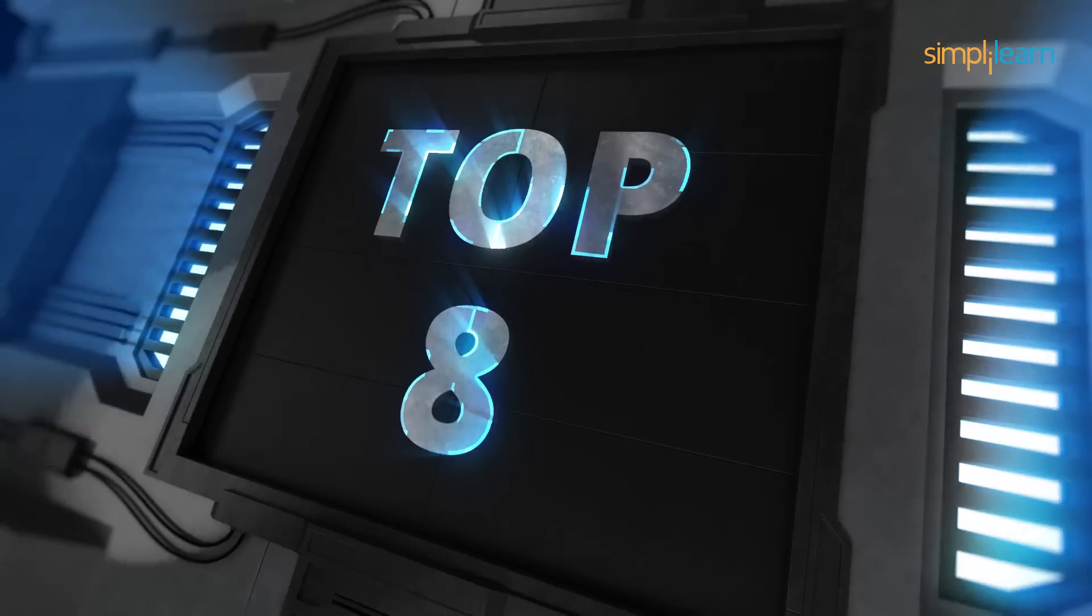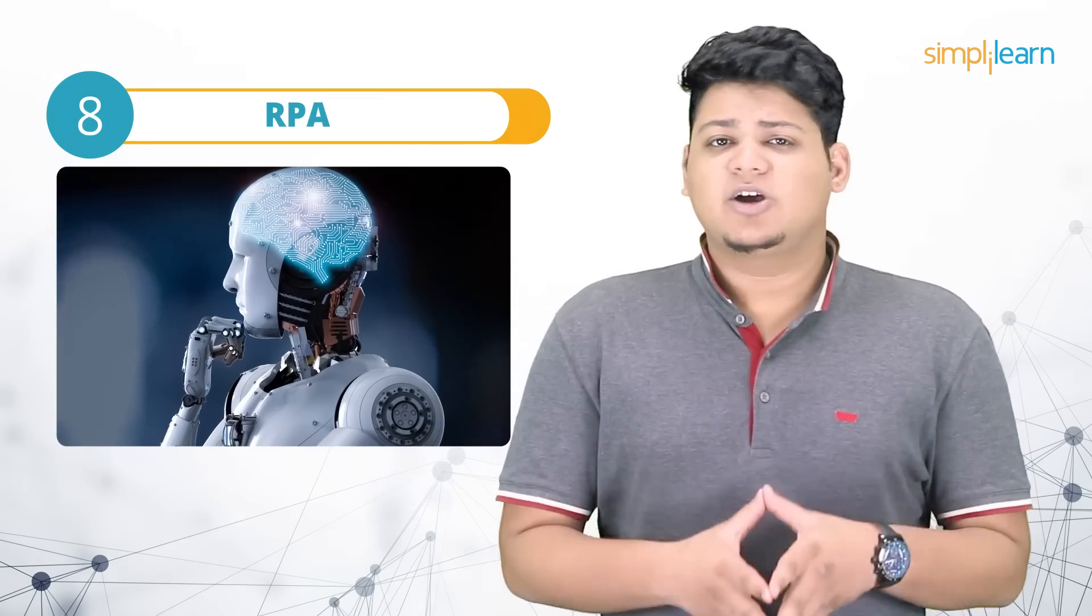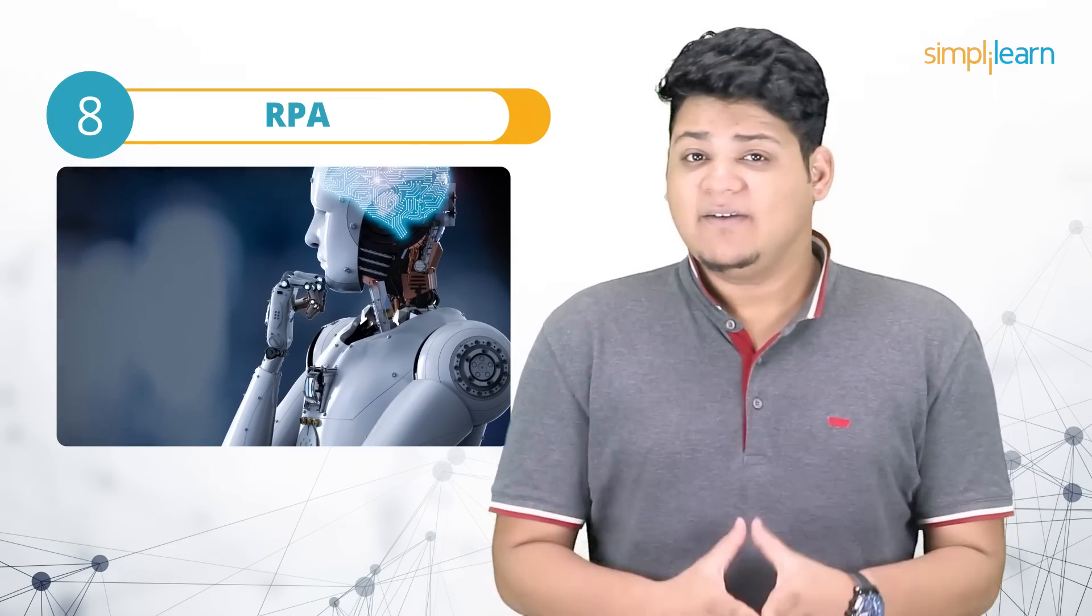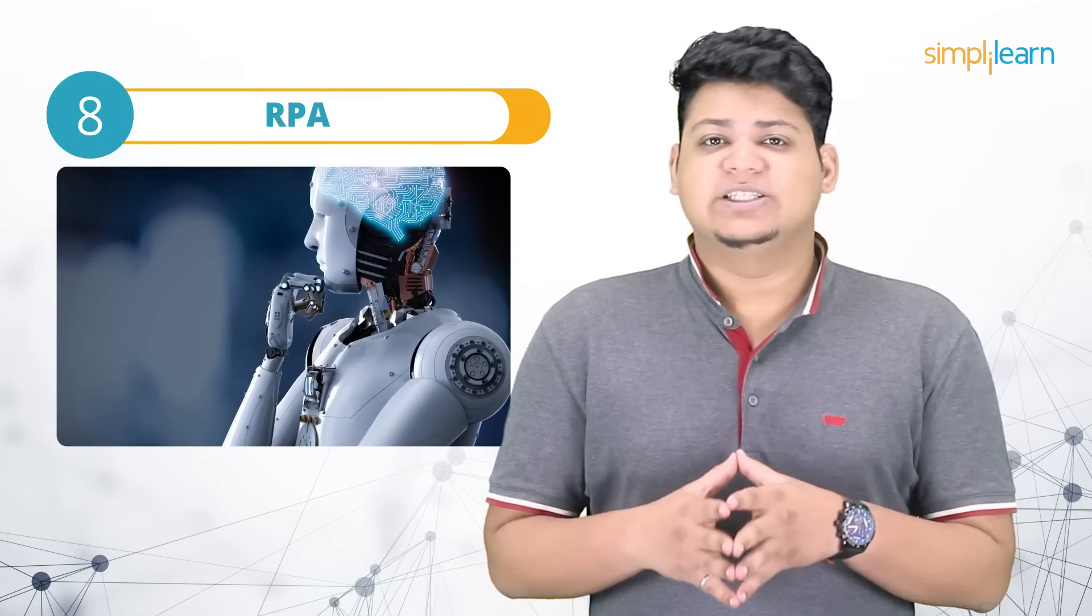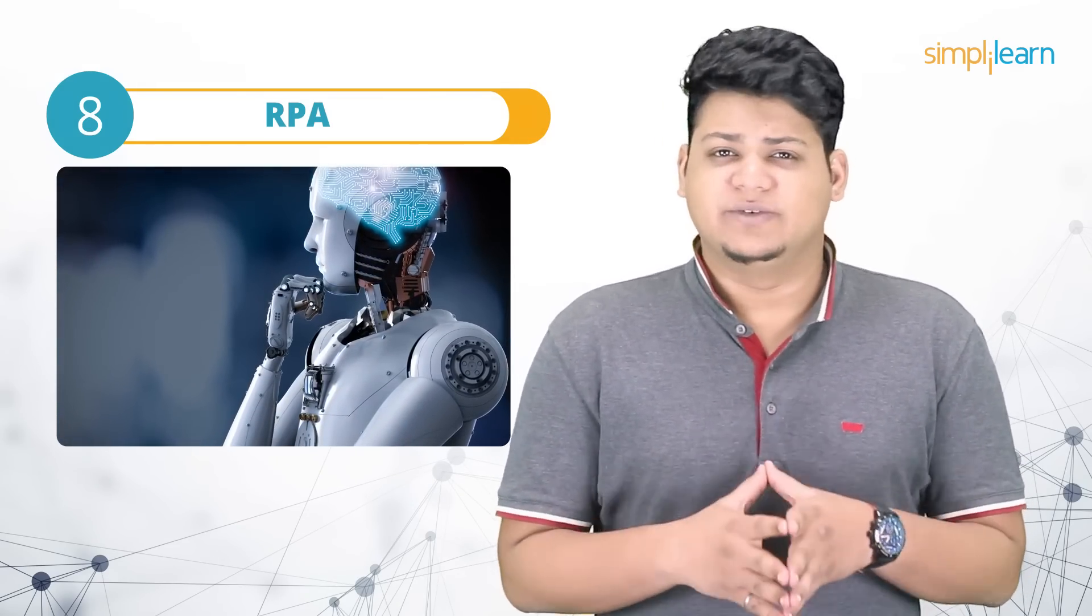At number 8, we have RPA or Robotic Process Automation. RPA is the process of automating anything and everything in the business operation with the help of robots to reduce human intervention.